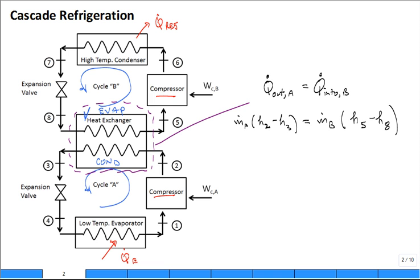And then you could get what is the coefficient of performance for the refrigeration system. It's what you desire, a lot of cooling in this evaporator related to the mass flow rate of A times H1 minus H4. Then you divide it by the power required to drive the compressor in A and the power required to drive the compressor in B.